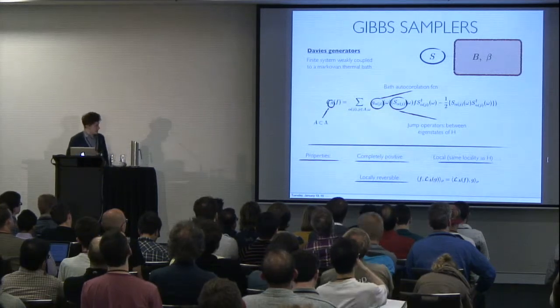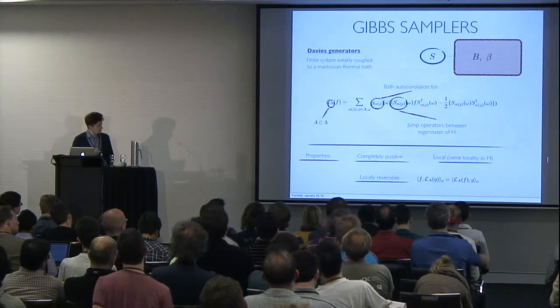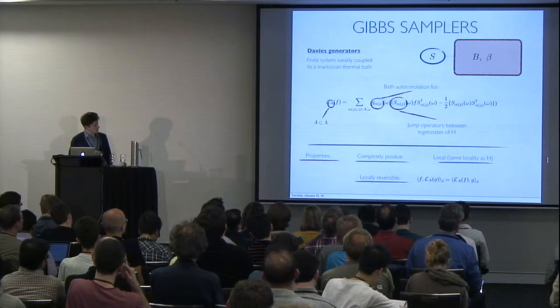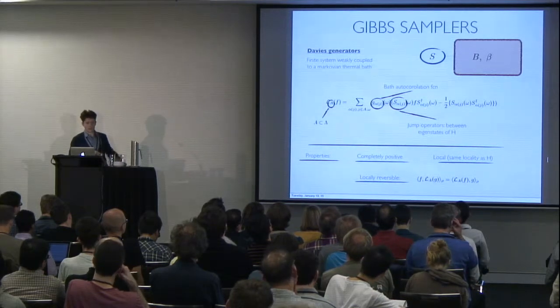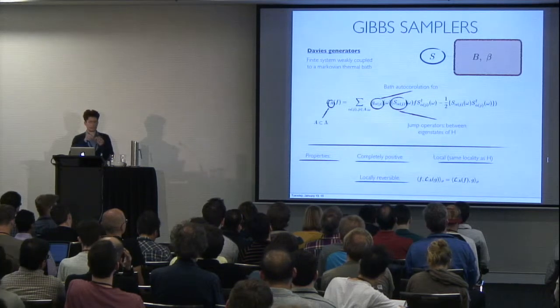So the property of this Gibbs sampler is that it's the generator of a completely positive semi-group. It is local. What that means is that these jump operators only have support on a few lattice sites,